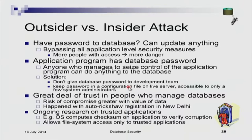When you have something like an RTO office which inherently has a lot of corruption, even these few trusted people can become untrusted. So you need to do something about it, which could involve keeping audit trails of what happened and who accessed the data.